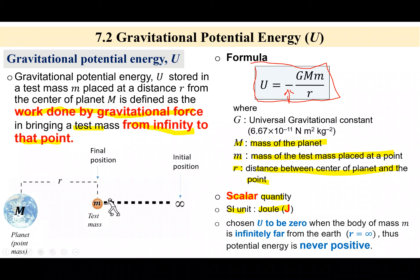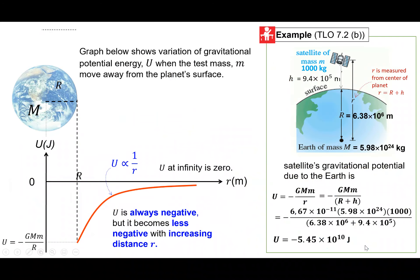Bila R tu infinity, R infinity tu maksudnya. So maksudnya contohlah, ini sampai sinilah maksudnya object tu terlalu jauh. So kita assume R dia adalah sama dengan infinity. So U dia kita assume to be zero. Therefore, kita punya potential energy tak akan ada positive.